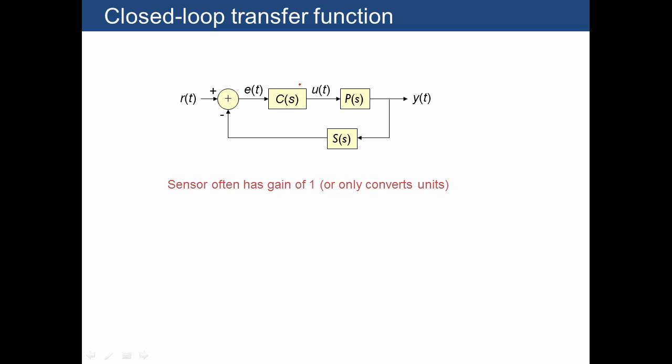Let's return to our original system with feedback and define what we call the closed-loop transfer function. And what that refers to is the entire system starting with the reference as the input and producing the output Y. In other words, it's Y of S over R of S. That's the closed-loop transfer function.